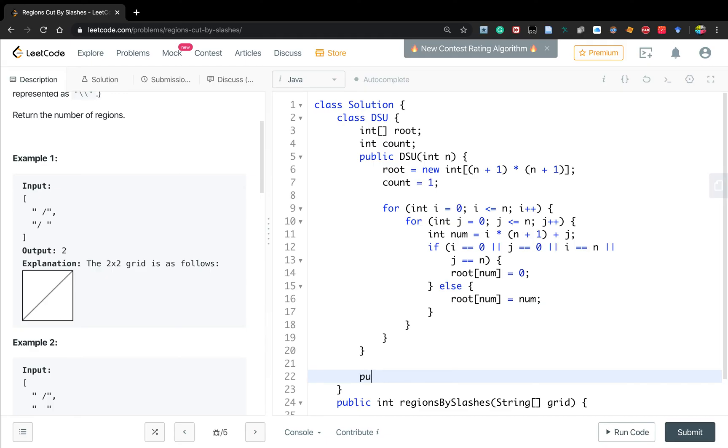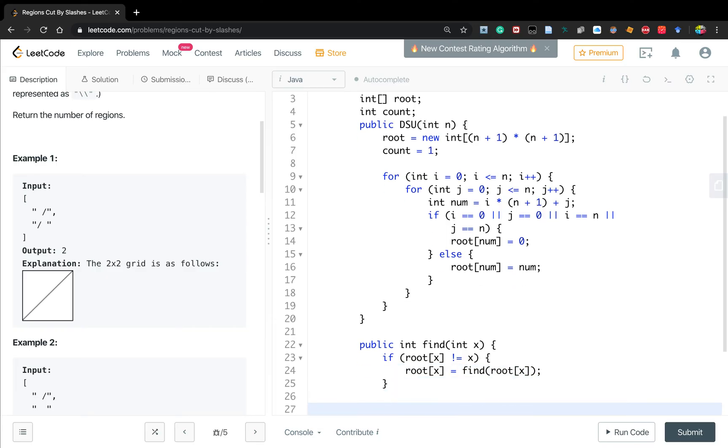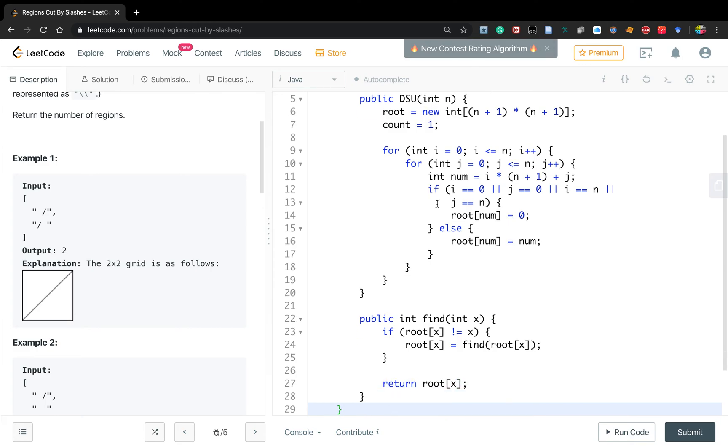Then we need to write the find for a given node. If root x is not equal to x, then we keep finding its root. So we change root x to find root x. If it is equal, we just return root x. In this case, we actually do the path compression.